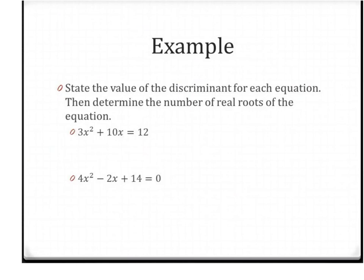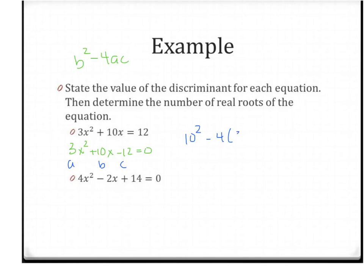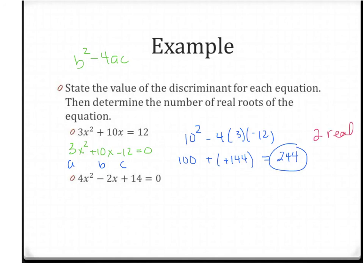We want to actually find the discriminant for these two equations and determine the number of real roots. Just like before, it has to be equal to zero, so move the 12 over. Your discriminant is b squared minus 4ac. We're going to look at 10 squared minus 4ac. Following order of operations, this is 100 minus negative 144, which is 100 plus 144, which is 244. That's my discriminant. It's positive, so I'm going to have two real solutions.